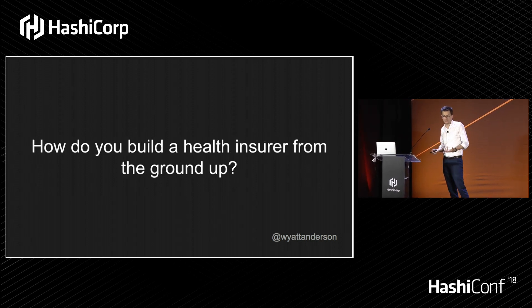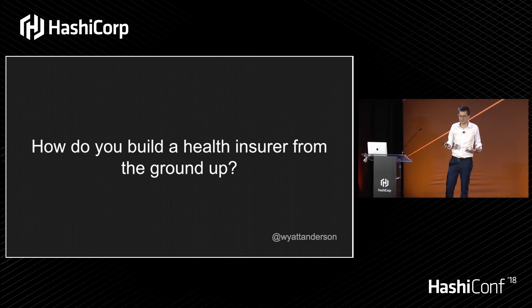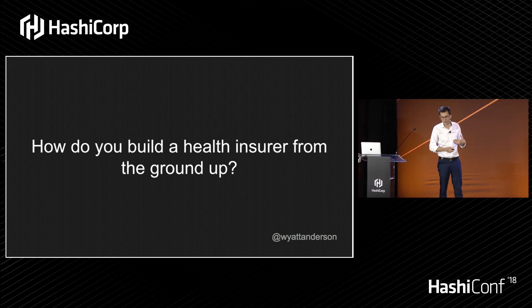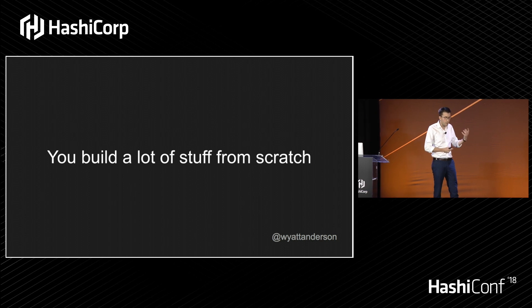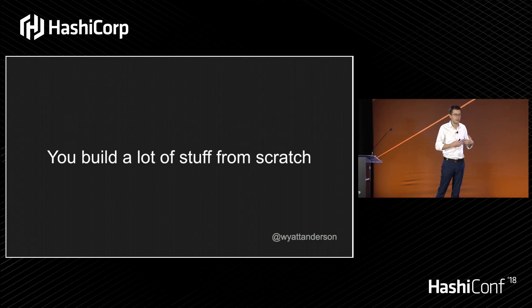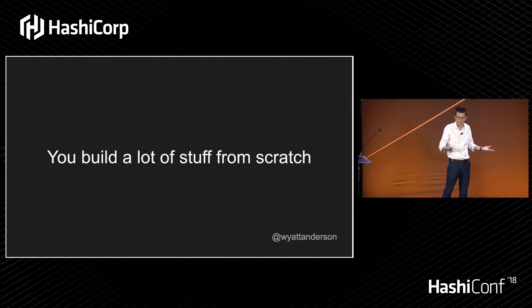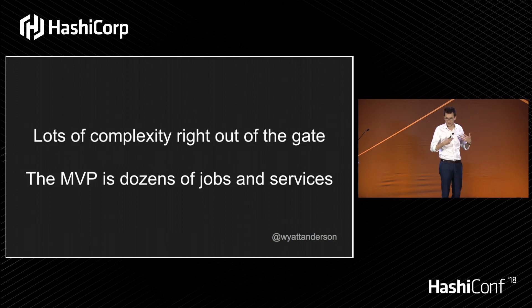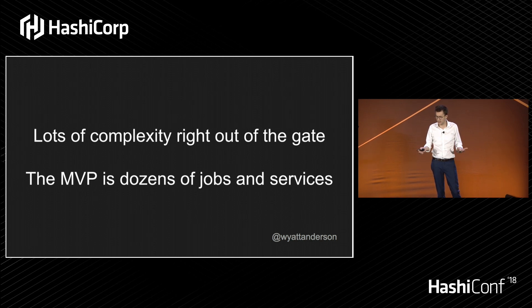How do you build a health insurer from the ground up? Health insurance is an industry that doesn't see a lot of frequent innovation, especially from the tech side. What you end up having to do is build a lot of stuff from scratch. We want to build a new, better health insurance company that really innovates. Building a lot of stuff from scratch means there's a lot of complexity right out of the gate. The minimum viable product for a health insurer is dozens of jobs and services.